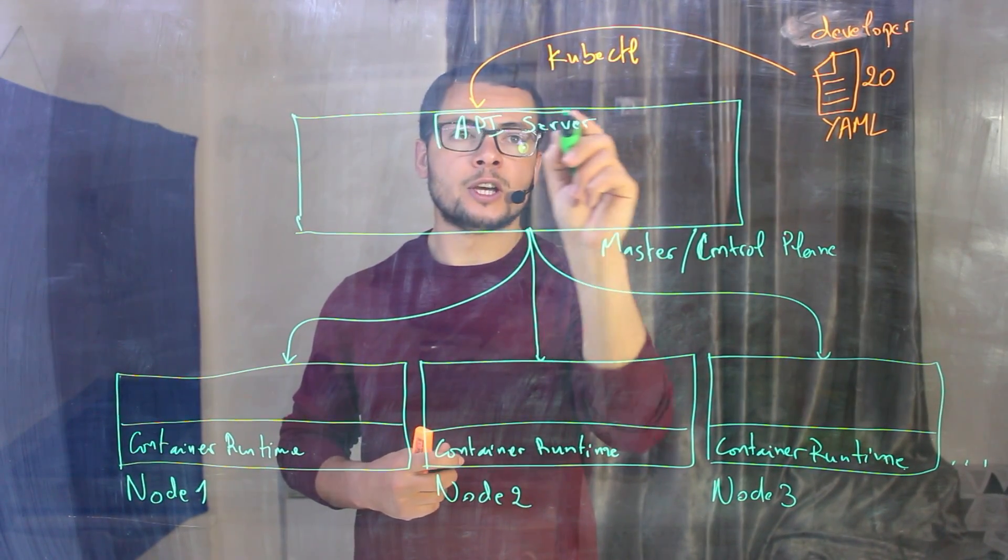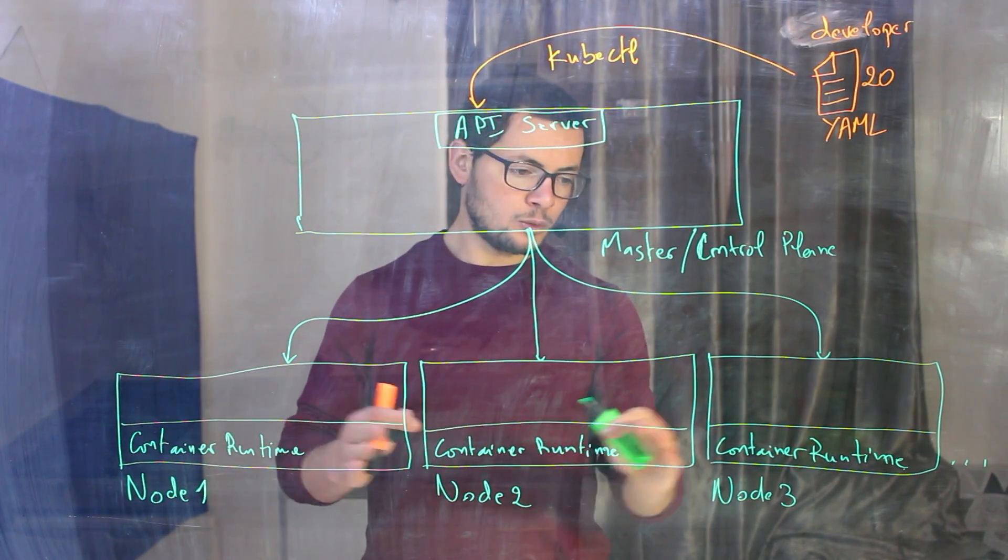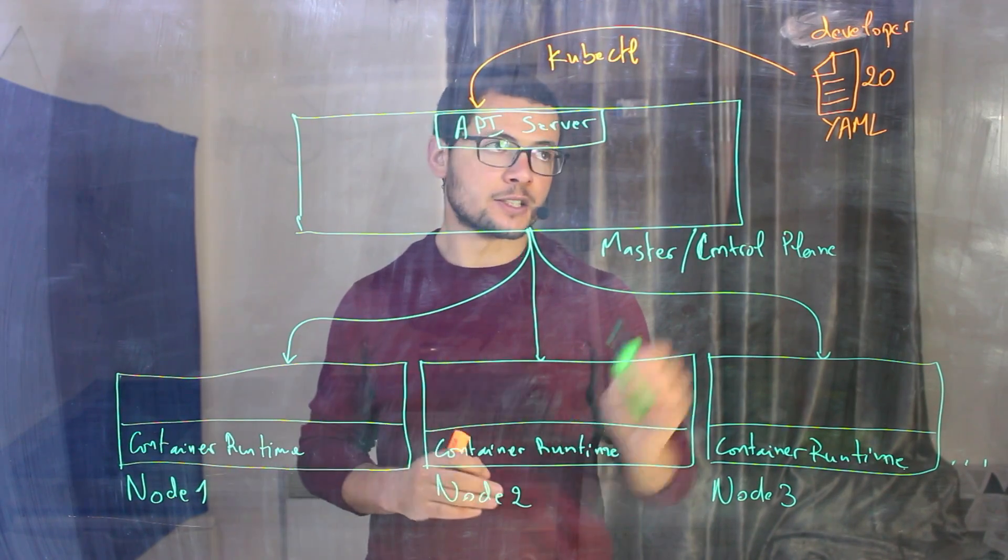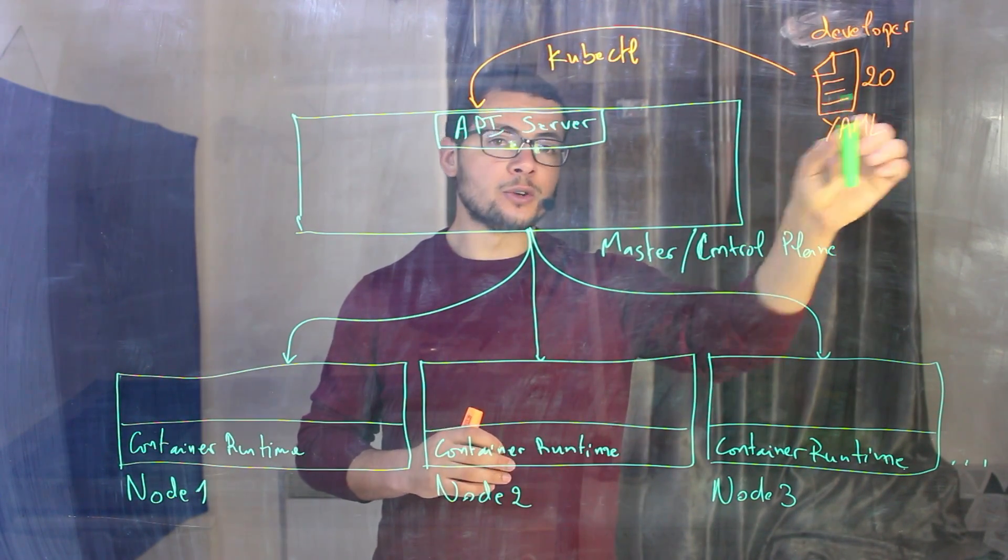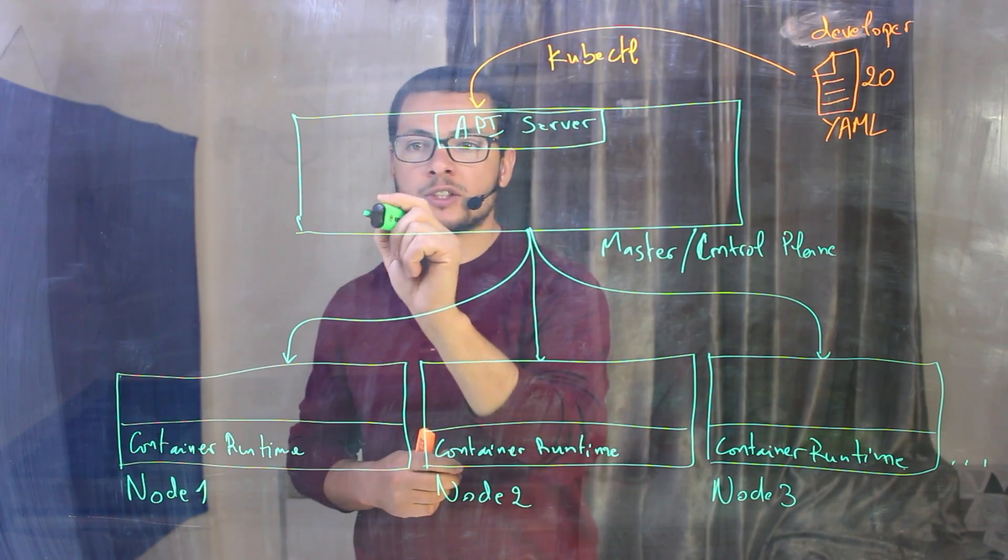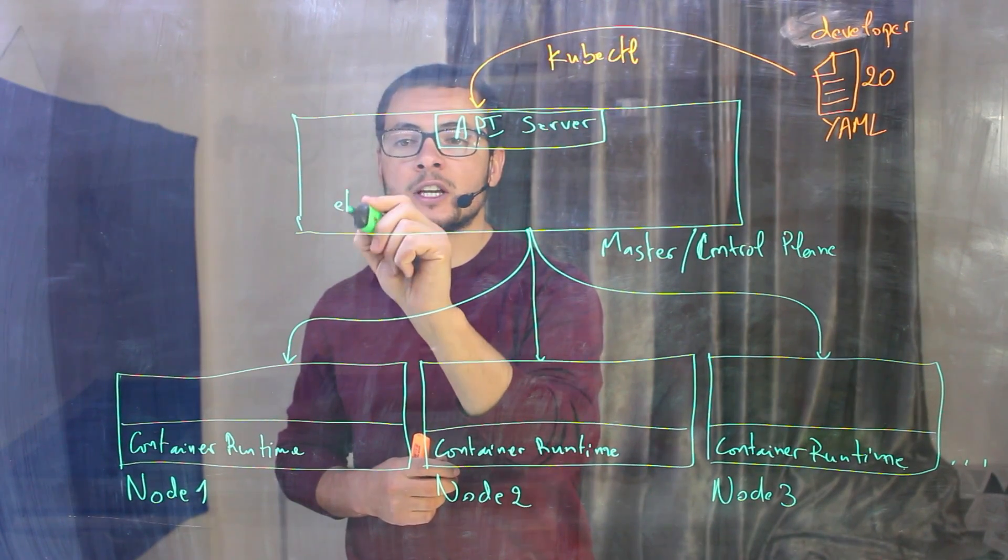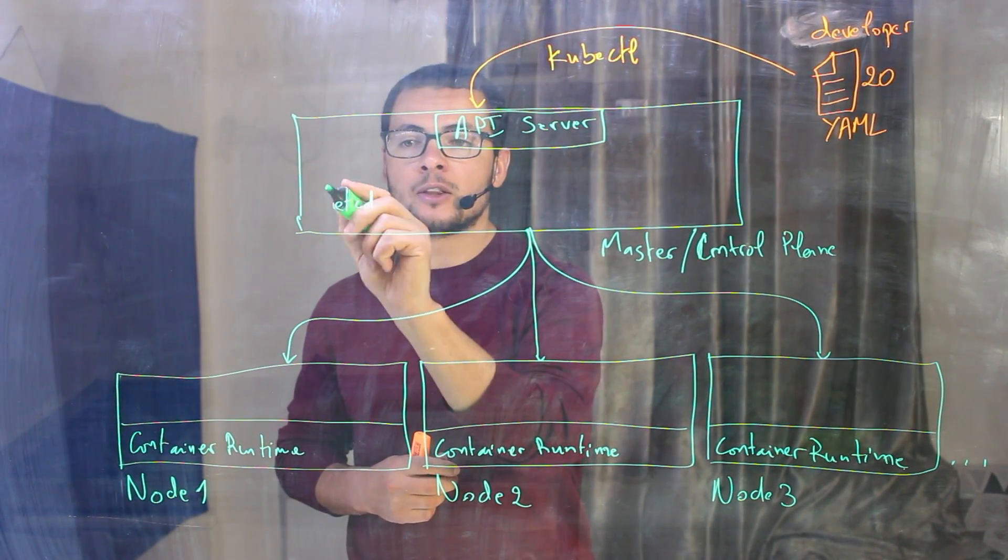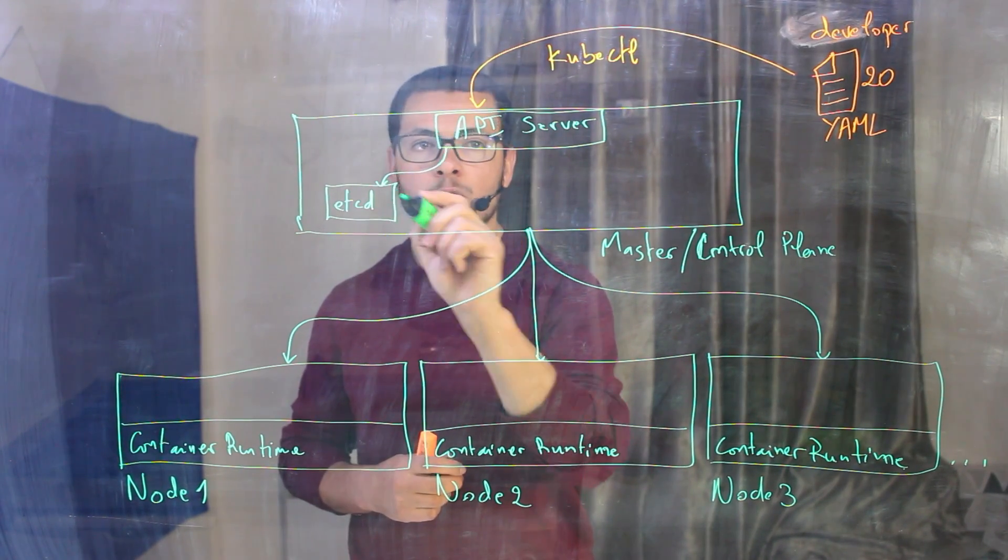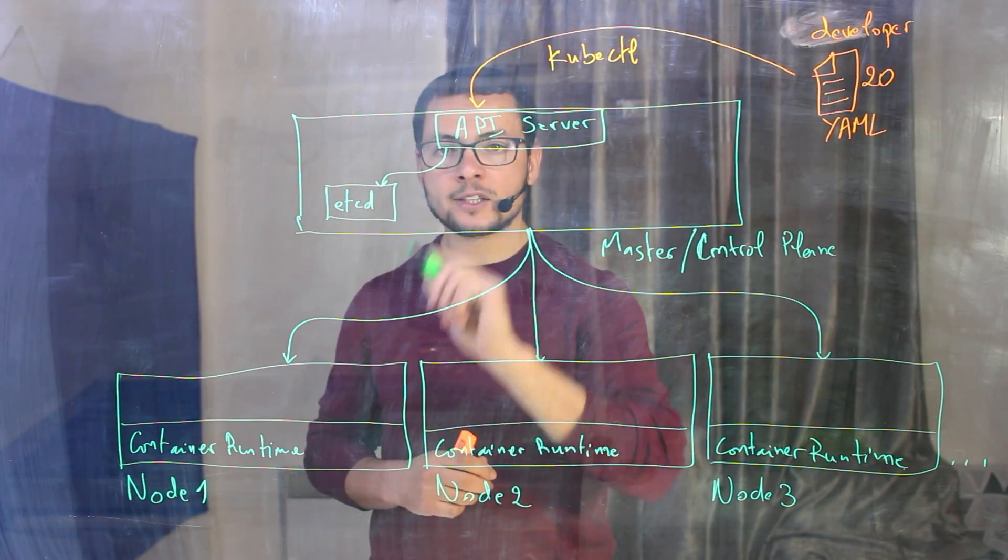Its role is to get the configuration. Then before running that configuration into those different nodes, it will check against the current state of the cluster. Maybe I have those 20 containers already running here. So it doesn't make sense to rerun that configuration. It will get that configuration from another component, which is the etcd. The etcd is like the database for the Kubernetes configuration. So the API server will talk to the etcd in order to get the current state of the cluster.